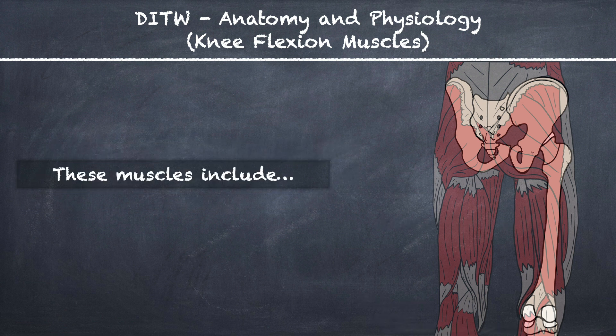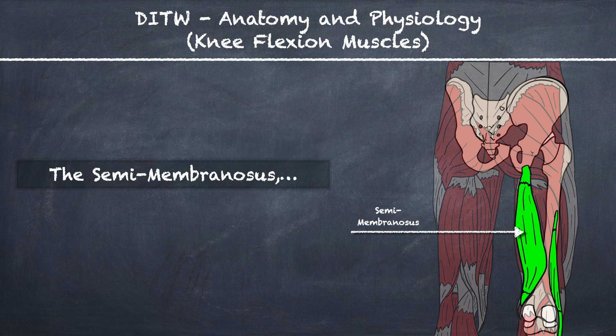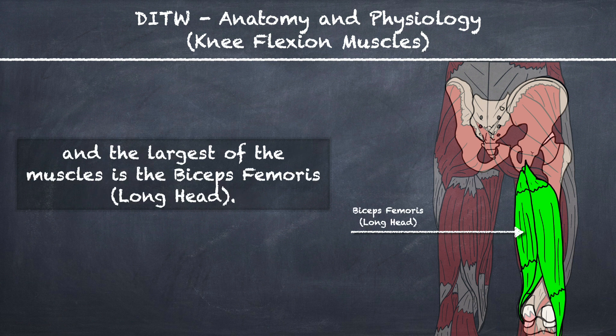These muscles include the biceps femoris short head, the semimembranosis. Directly on top of the semimembranosis is the semitendinosis, and the largest of the muscles is the biceps femoris long head.